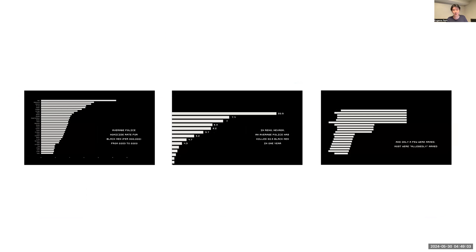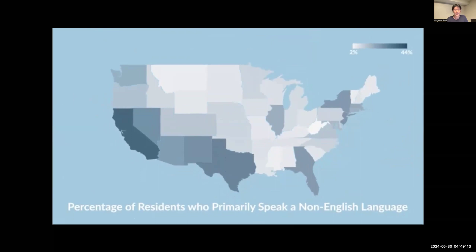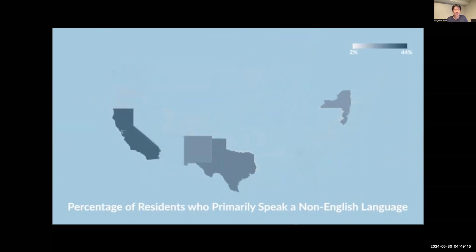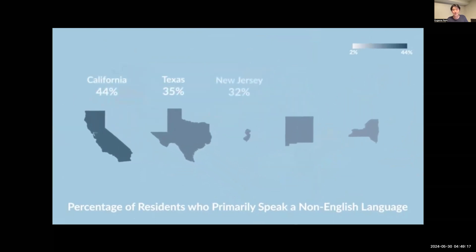In one particular sequence, the decision to transform a horizontal bar graph into a silhouette of a gun was a nice touch. And when presenting a dense graph or map, students are advised to filter the visual into smaller multiples, making it easier for viewers to process the scene.